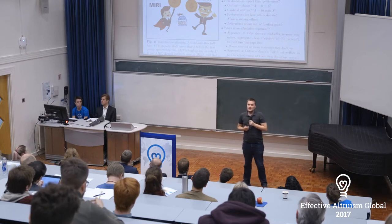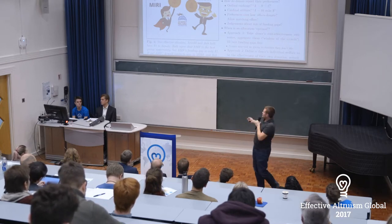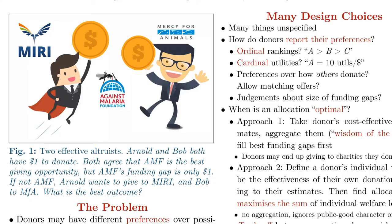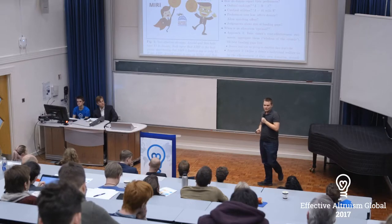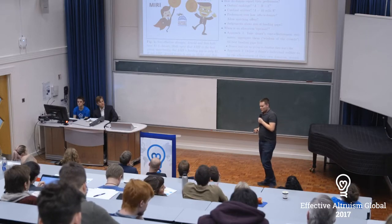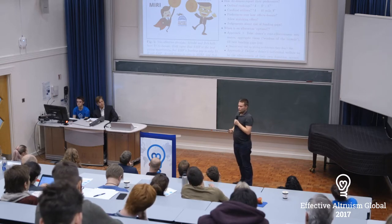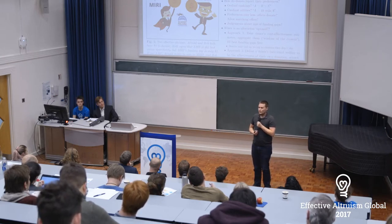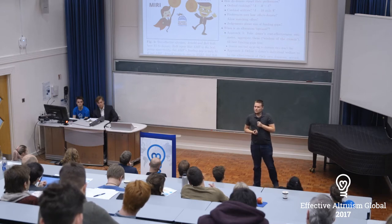Another interesting problem is strategic behavior. In our example, both Arnold and Bob might want to lie about how much they like AMF. If Bob claims AMF isn't very good, Arnold might be the only one giving to AMF, leaving Bob free to give his dollar to Mercy for Animals — which is good from Bob's perspective but may produce less efficient outcomes overall. It's unlikely we can fully prevent such strategic incentives, but we can try to limit them.